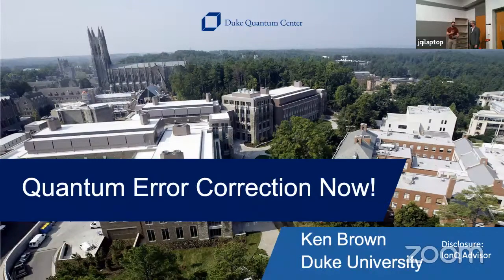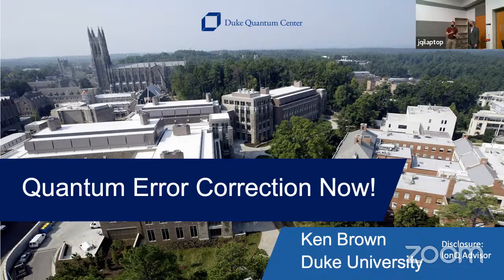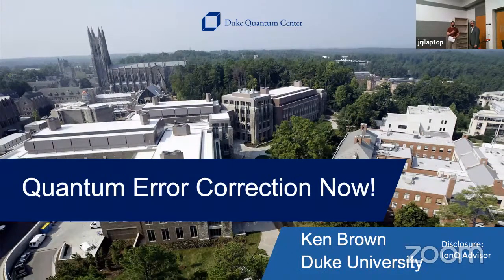The first time I heard Ken's name was in a 2006 paper. Following a proposal by the ion storage group in Boulder, a theory group he joined at MIT demonstrated a surface electrode ion trap — an amazing trap that could trap ions, split chains, combine them, and move them across different zones of a quantum CCD. I remember thinking, 'Wow, where did this theory group get all this all of a sudden?'